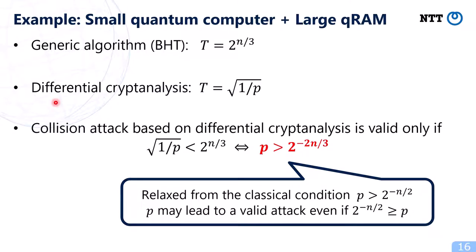For example, in the first quantum setting where a small quantum computer and large quantum RAM are available, the generic complexity is 2 to the power n over 3. The complexity of differential cryptanalysis is the square root of 1 over p. So a dedicated collision attack based on differential cryptanalysis is valid only if the square root of 1 over p is less than 2 to the power n over 3. This condition is much more relaxed than the classical condition p greater than 2 to the power minus n over 2. In particular, the differential probability p may lead to a valid attack even if p is less than the birthday bound 2 to the power minus n over 2.